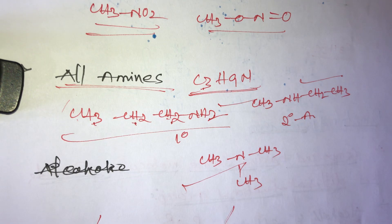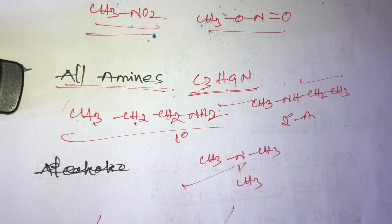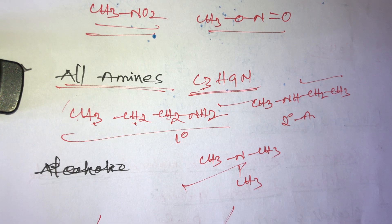So functional isomers are compounds having the same molecular formula but different functional groups. If you like this video, please like, share, comment, and subscribe to my channel. Thank you.